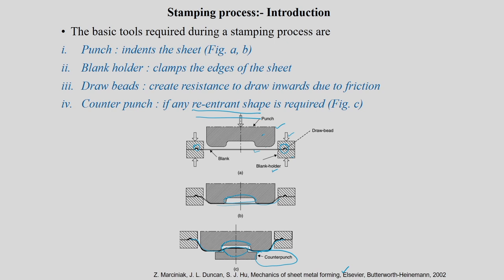The blank holder is used to hold the sheet in a double-stage stamping process. First, the blank holder comes and holds the sheet at a specific location, and then the punch comes down and deforms the sheet. The punch keeps deforming the sheet while the blank holder holds it throughout. If appropriate blank holding force is not provided, there will be a lot of wrinkling in the flange of the sheet.